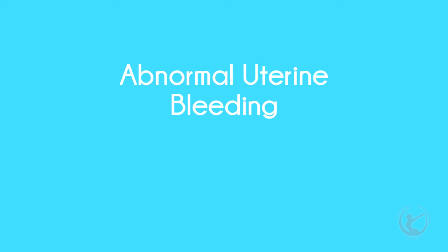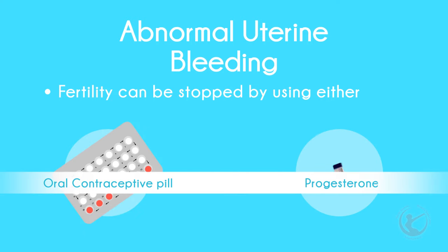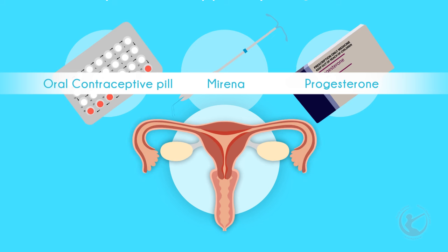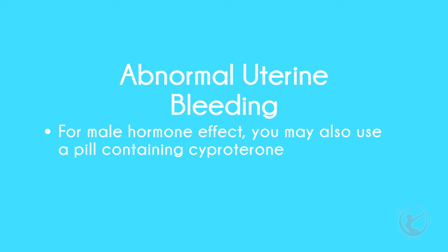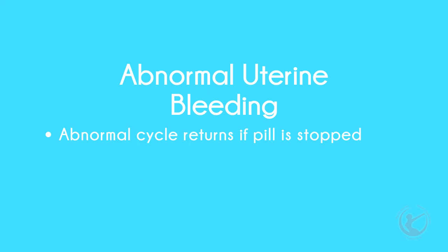Abnormal uterine bleeding: if fertility is not desired, this can be controlled by either using an oral contraceptive pill, progesterone only, or the Mirena. The estrogen builds up the lining of the uterus, and the pill, progesterone, or the Mirena provides the progesterone necessary to counteract this. Where there are male hormone effects as well, a pill with an anti-male hormone called cyproterone acetate may be used — for example, Diane, Estelle, or Jeanette. Keep in mind that your menstrual cycle will become abnormal again if the pill is stopped.